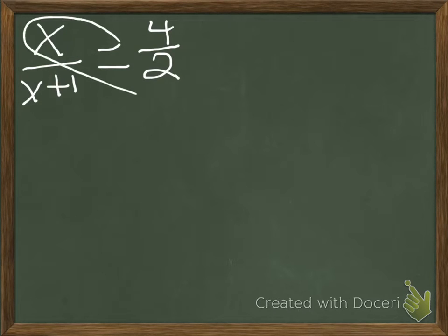So, tenemos un ejemplo aquí que podemos hacer: x sobre x más 1 igual a 4 sobre 2. Tenemos que podemos multiplicar así cruzado.